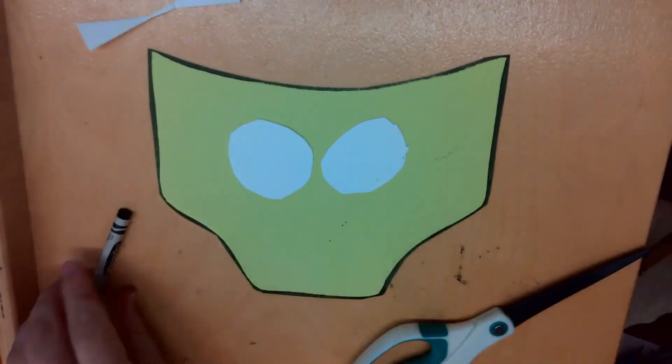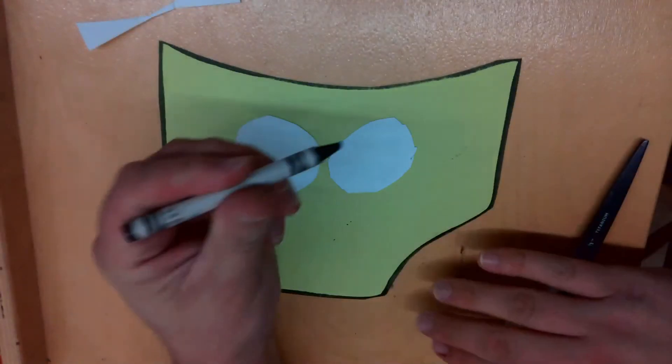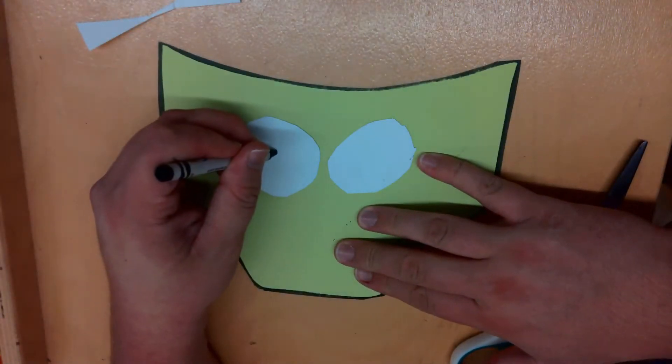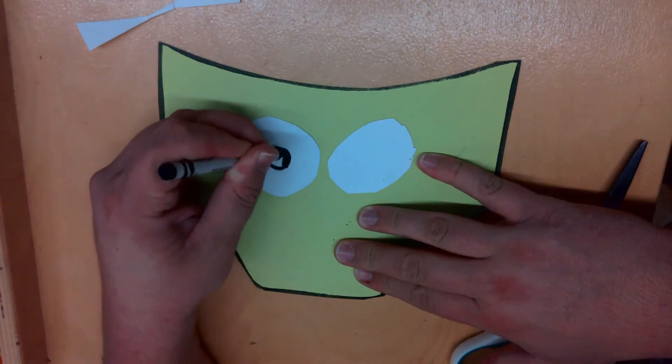Alright, up next, we're going to make the pupils. So we're going to take our black crayon and we're going to make a nice big circle and then color it in. And those are going to be the pupils of the eyes.